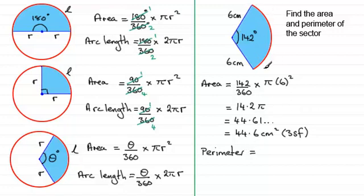So for the arc length, it's going to be a fraction of the circumference. That fraction will be 142/360ths of the circumference, that's 2 times π times the radius, which would be 6. And that's the arc length.